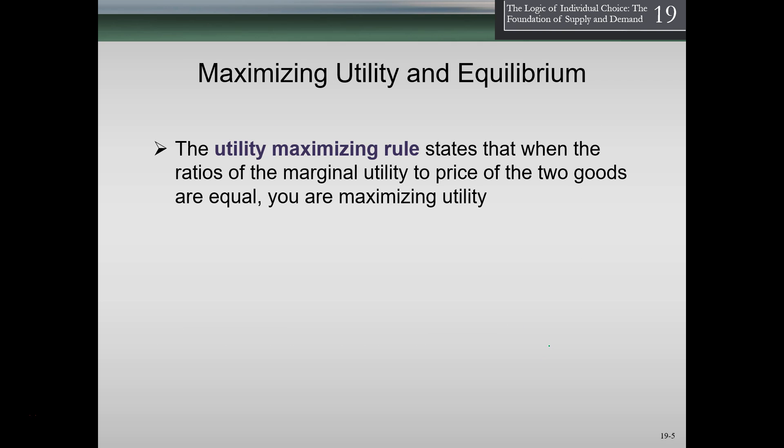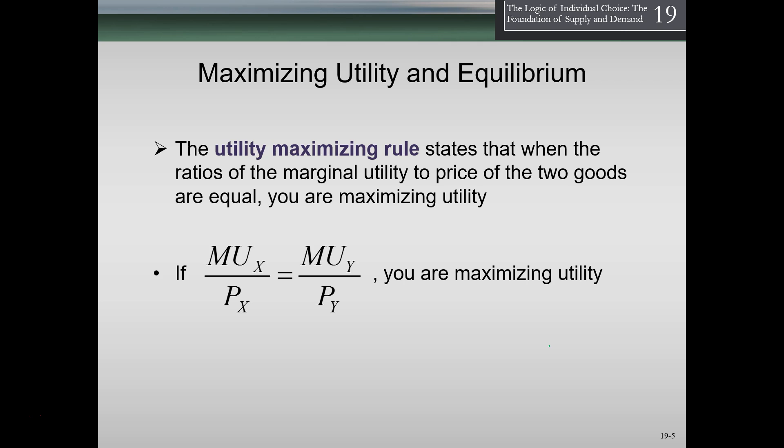The utility maximizing rule states that when the ratios of marginal utility to price of the two goods are equal, you are maximizing utility. We continue to buy x and y, and once the marginal utility per dollar of buying another unit of x equals that of y, we have reached our maximizing point.